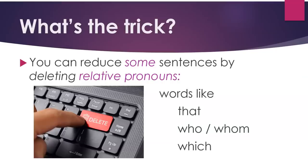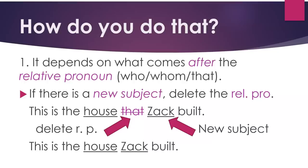What's the trick? You can reduce some sentences by deleting relative pronouns, which are words like that, who, whom, and which. It depends on what comes after the relative pronoun. If there is a new subject, delete the relative pronoun. For example, in 'This is the house that Zack built,' delete 'that' because there is a new subject following it — Zack. The reduced sentence is: This is the house Zack built.